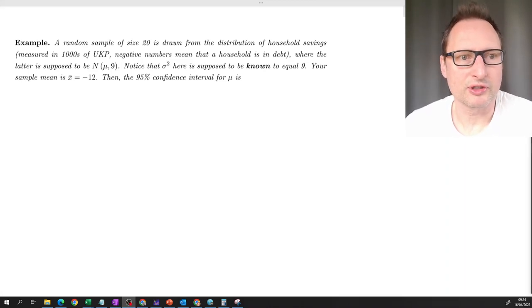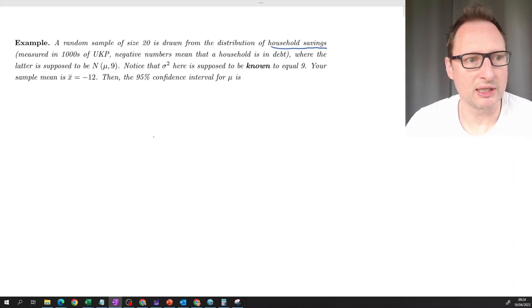So this is a confidence interval example. We are interested in the average amount of household savings. So household savings is what we are interested in, measured in thousands of pounds.